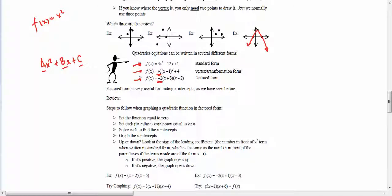This particular parabola that we're looking at is negative 2. So it's being flipped upside down, stretched vertically. And it also tells us where the zeros are of this function, at negative 3 and at positive 2. Factored form is very useful for finding x-intercepts as we've seen before.